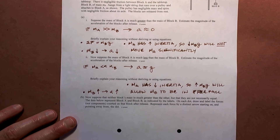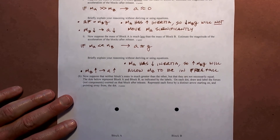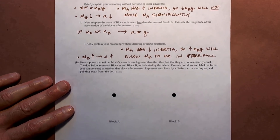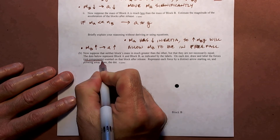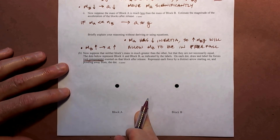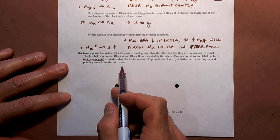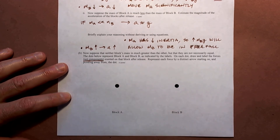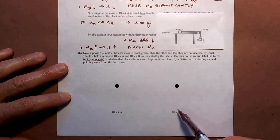The next question says: now suppose that neither block's mass is much greater than the other, but they're not necessarily equal. The dots below represent block A and block B as indicated by the labels. On each dot, draw and label the forces — not components, as always for free body diagrams — exerted on that block after release. Represent each force by a distinct arrow starting on and pointing away from the dot. So here's our diagram — we've got block A and block B.